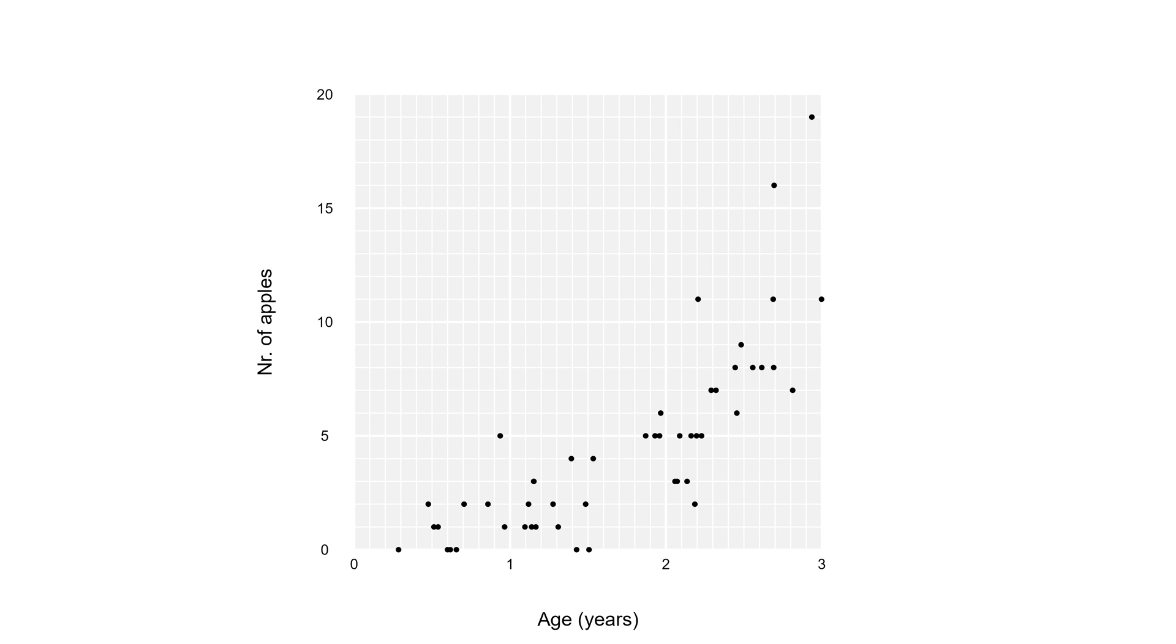Since the outcome is a count, we'll try to model this with a Poisson distribution, which is the probability distribution of independent counts. In a Poisson GLM, we are estimating the effect of the explanatory variable on the rate lambda. So in this case, we're estimating the effect of age on the average number of apples produced.